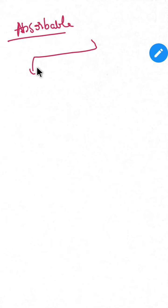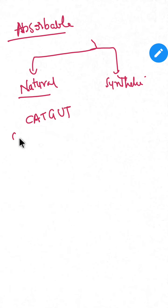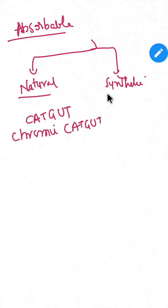Let's see one by one. First is observable. There are natural observable sutures and synthetic observable sutures. In nature we have cat gut and chromic cat gut. In the synthetic we have polyglycaprone.